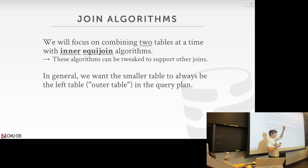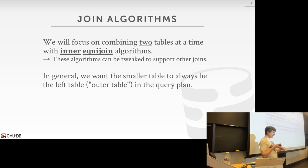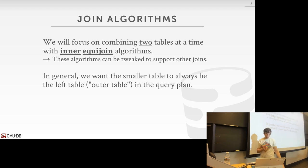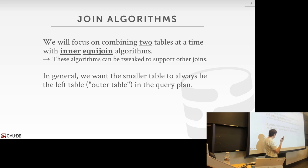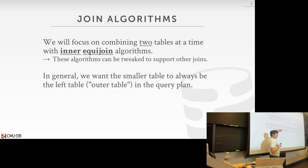An equi-join means that we're taking a tuple from one table and checking whether there's an equality match for a tuple in the other table. We're not worried about less than, greater than, or anti-joins. We're also focusing on inner joins because that's the most common, and adding outer join support is not a major change. In general, for all the algorithms we'll talk about today, we should almost always put the smaller table as the left table — the outer table — in the join operation.